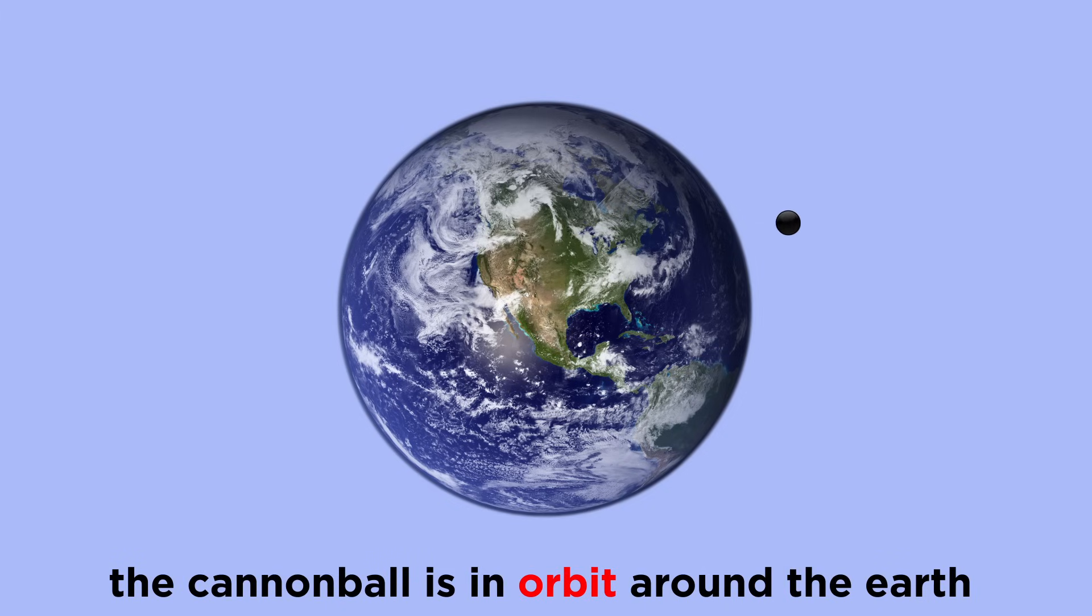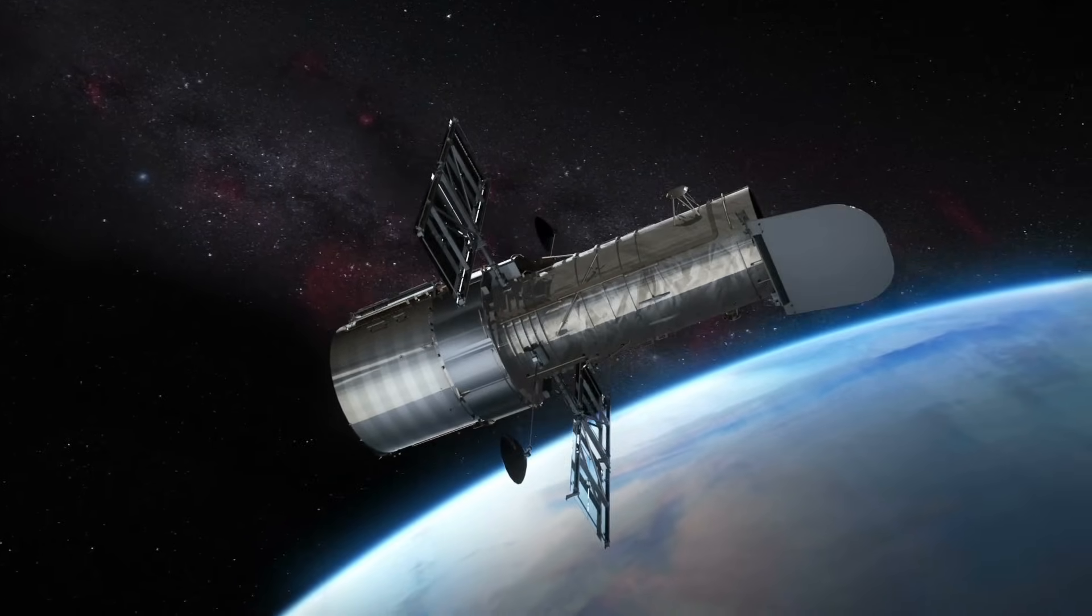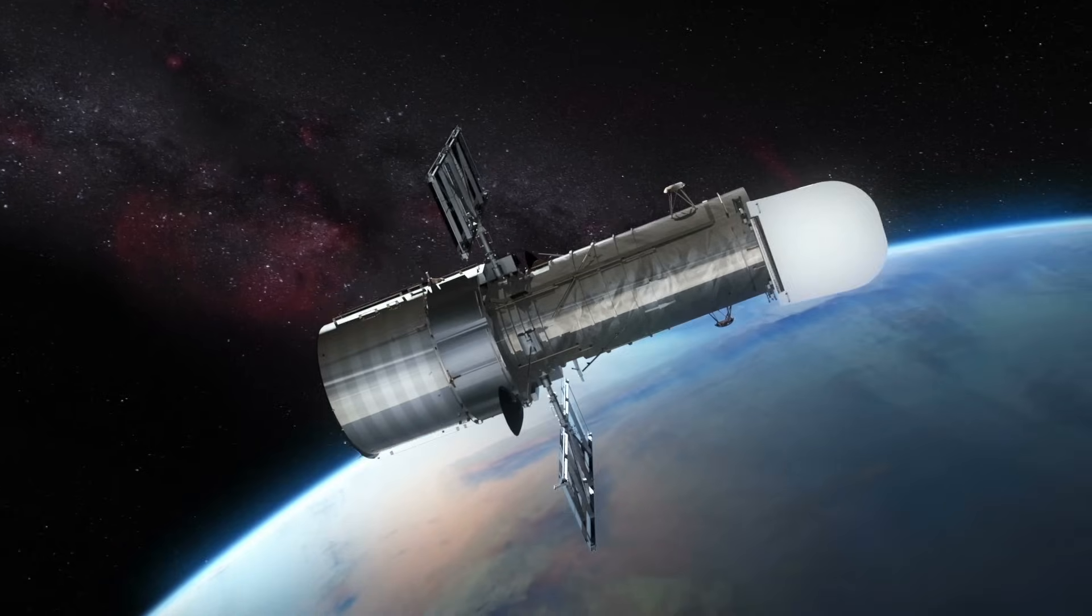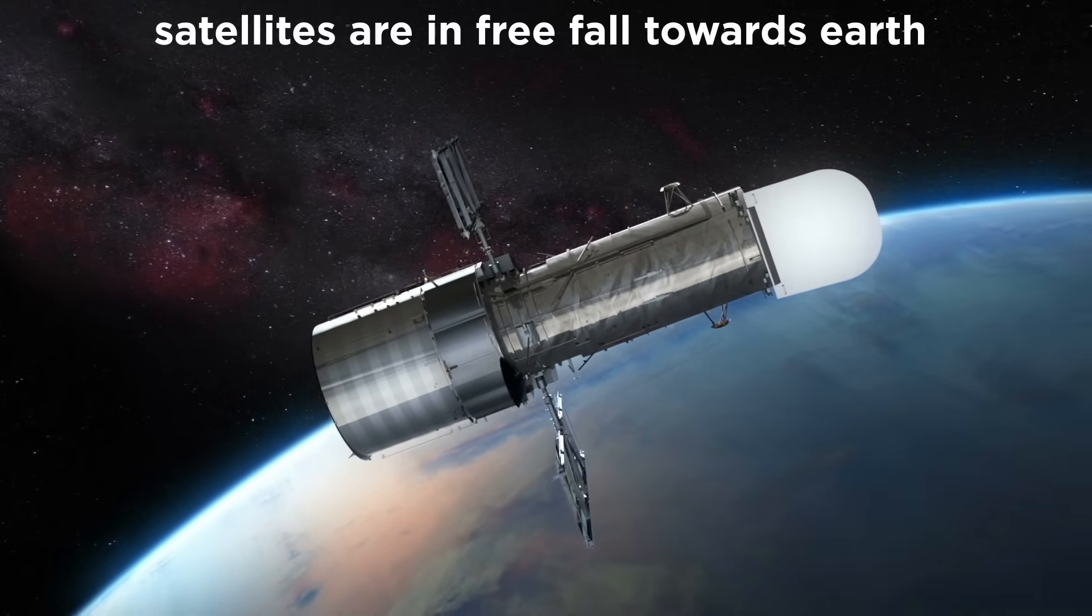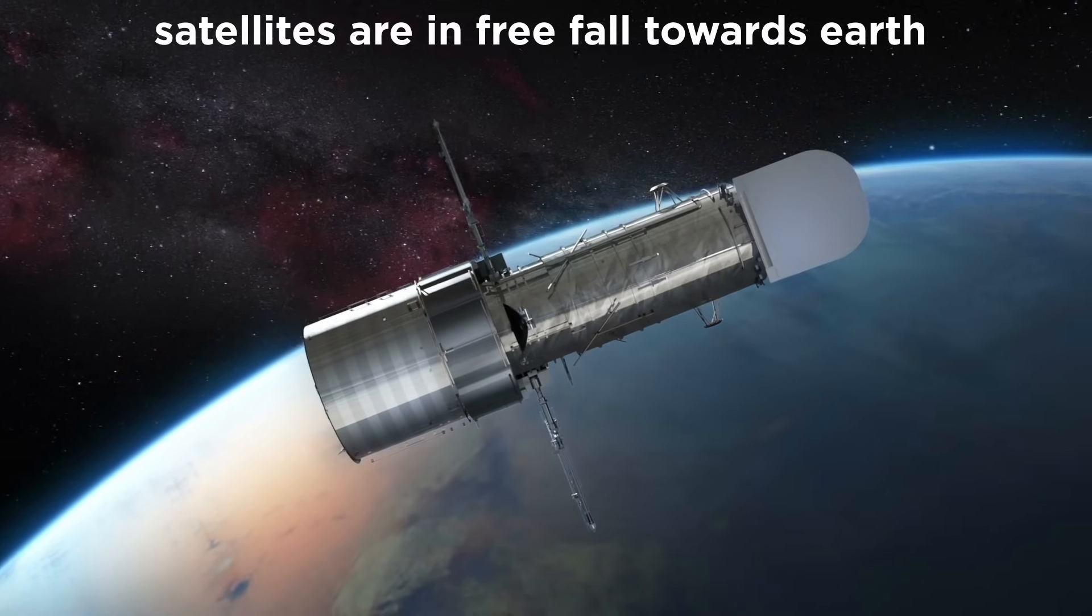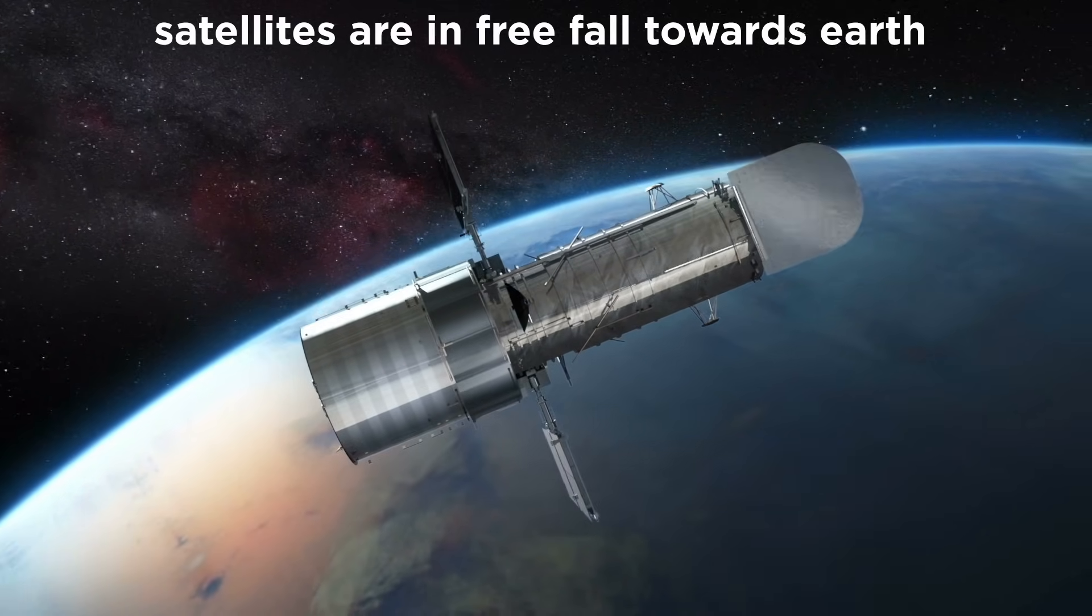Of course no cannon can do this, but we have finally achieved this feat with all of our satellites and space stations, which are brought up to orbit on rockets. These are very far from Earth's surface, and they are moving with such great speed that they, along with anyone on board, are always falling towards the Earth.